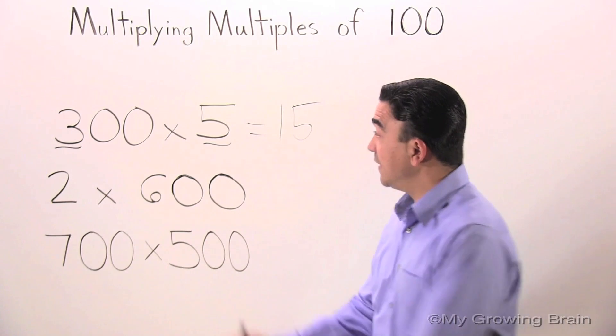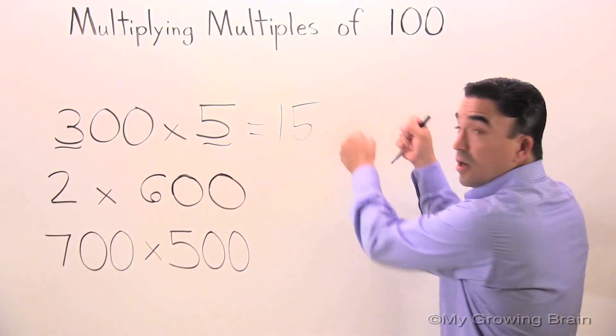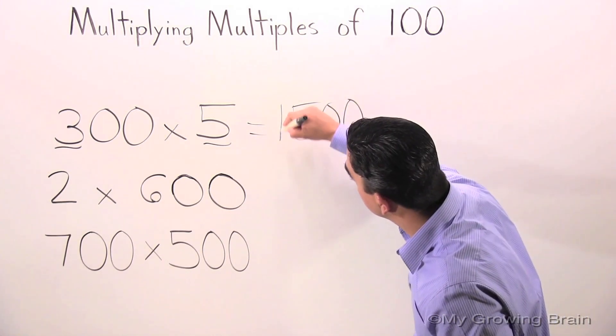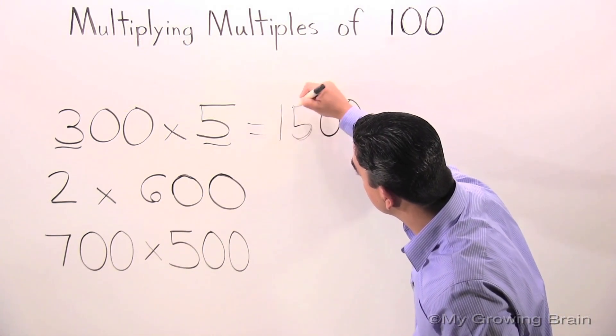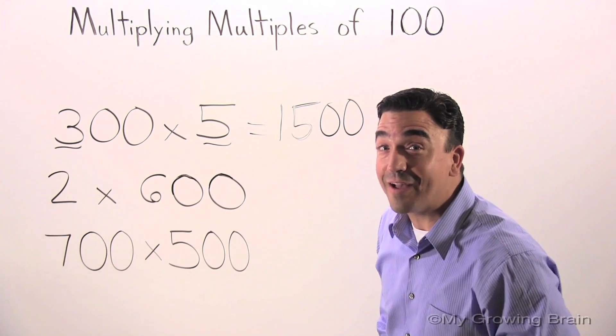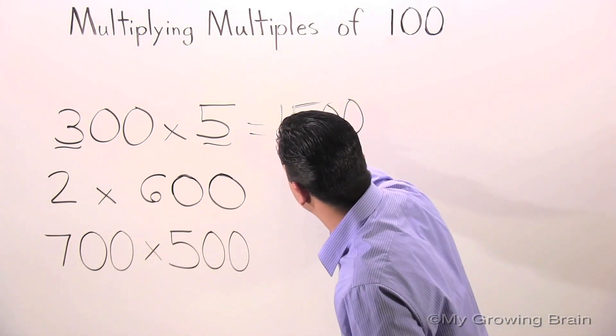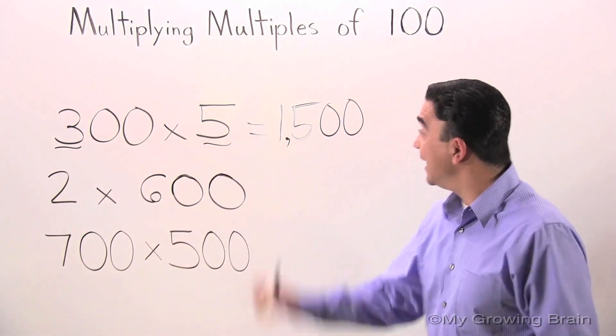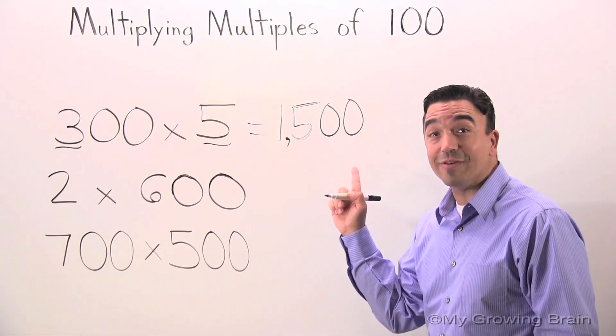Then I'm going to take my two zeros and bring them right over here next to the 15. Don't forget the comma. 300 times 5 equals 1,500.